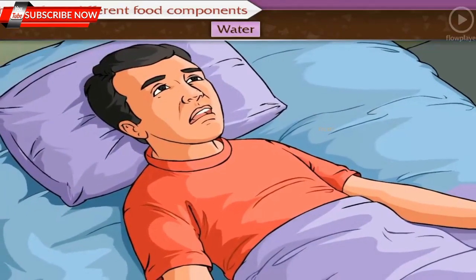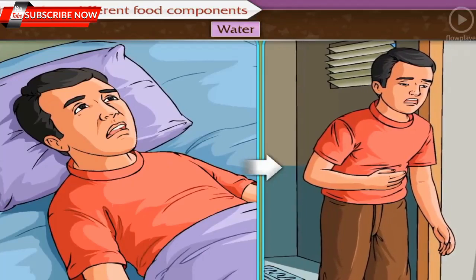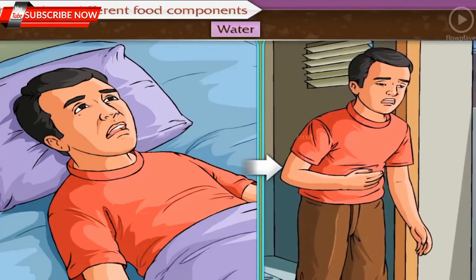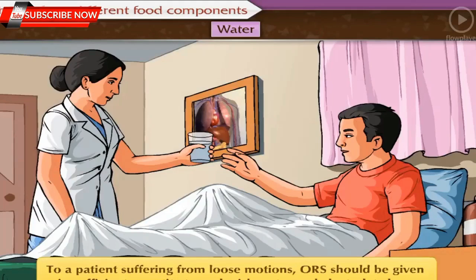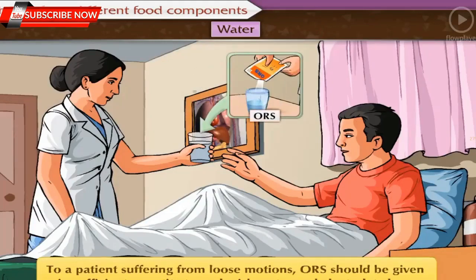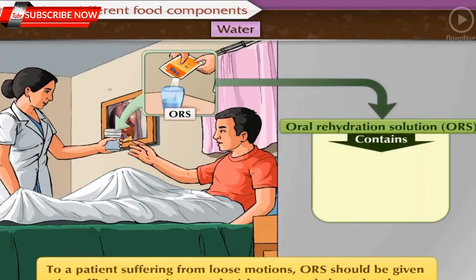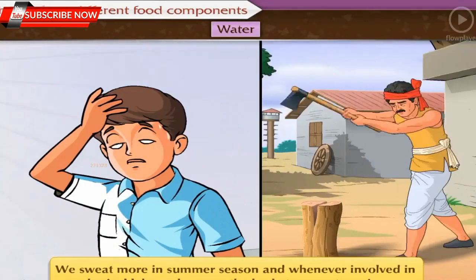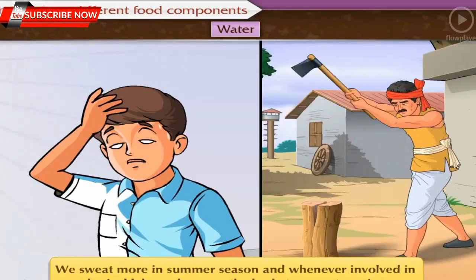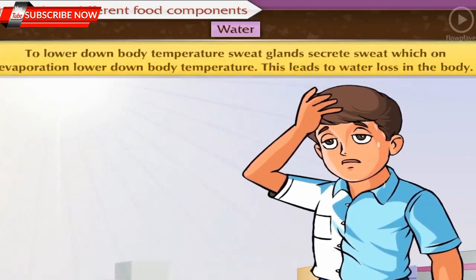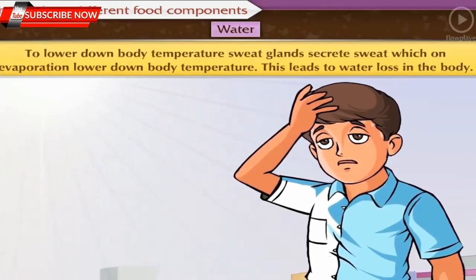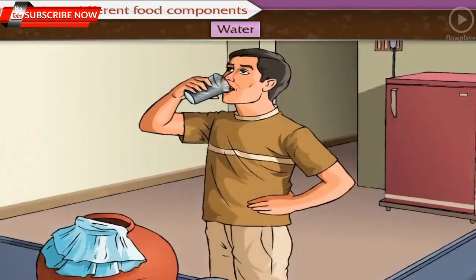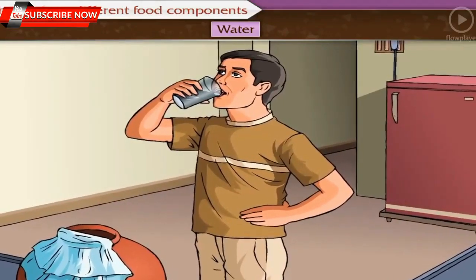If someone in your family is experiencing loose motions, there is a considerable loss of water and electrolytes. Therefore, to replenish water and electrolytes, we should give them oral rehydration solution (ORS) in sufficient quantity, which contains salt, sugar, and water. We sweat more in summer and during physical labor because body temperature rises. To lower body temperature, sweat glands secrete sweat, which on evaporation lowers body temperature — leading to water loss. Therefore, we should always drink sufficient water.